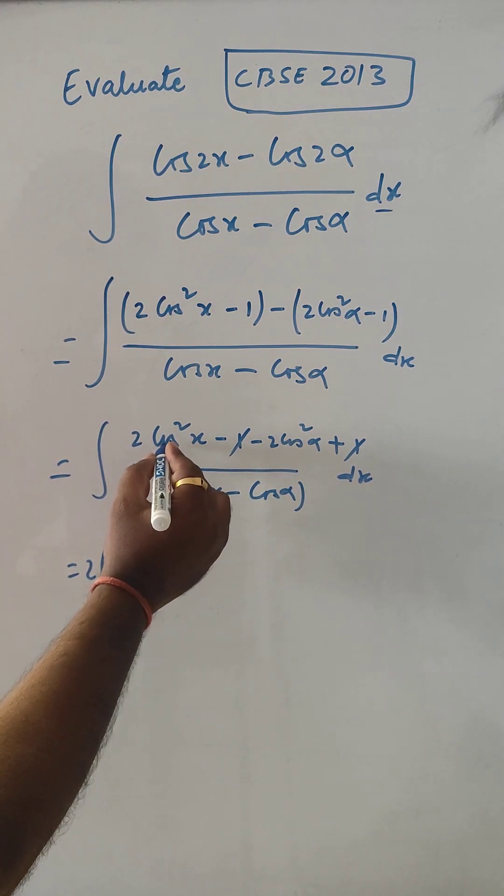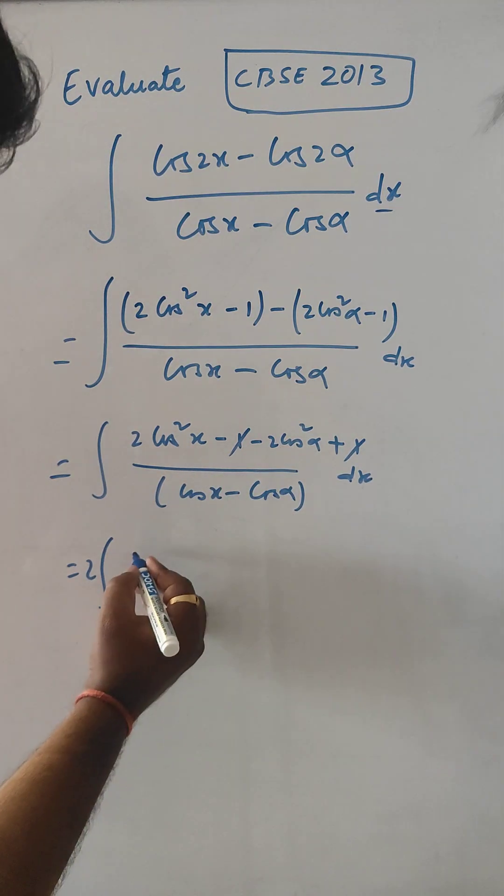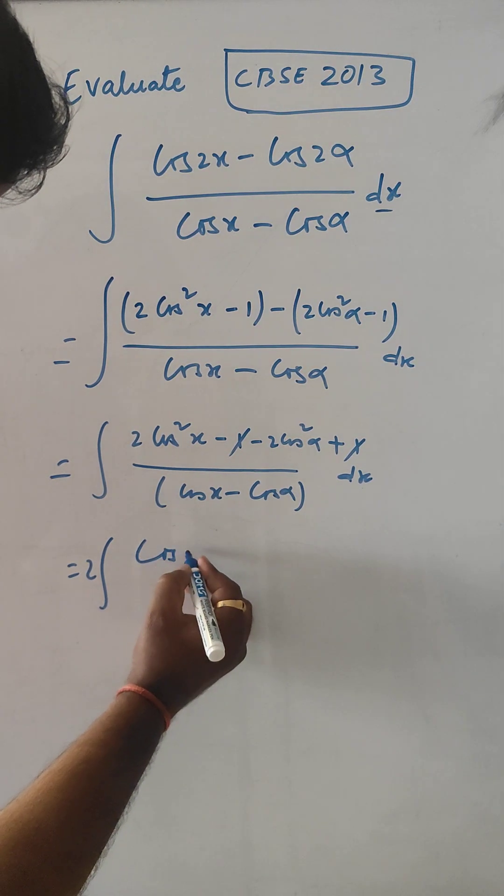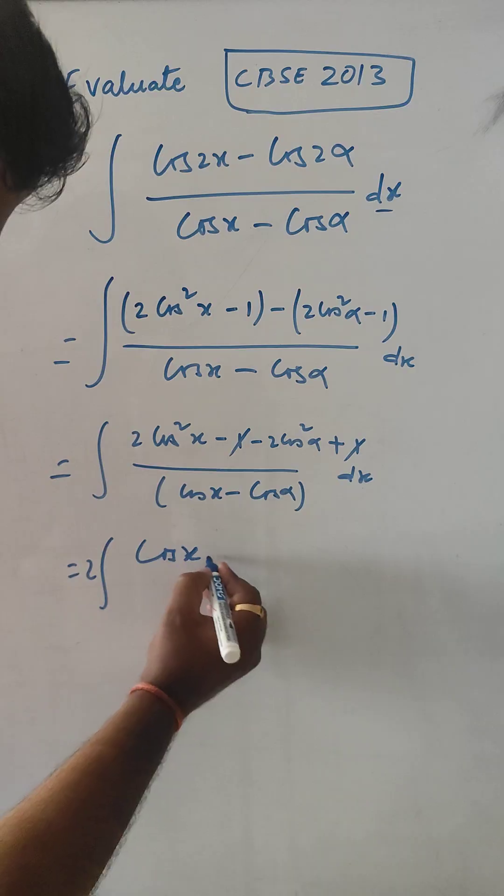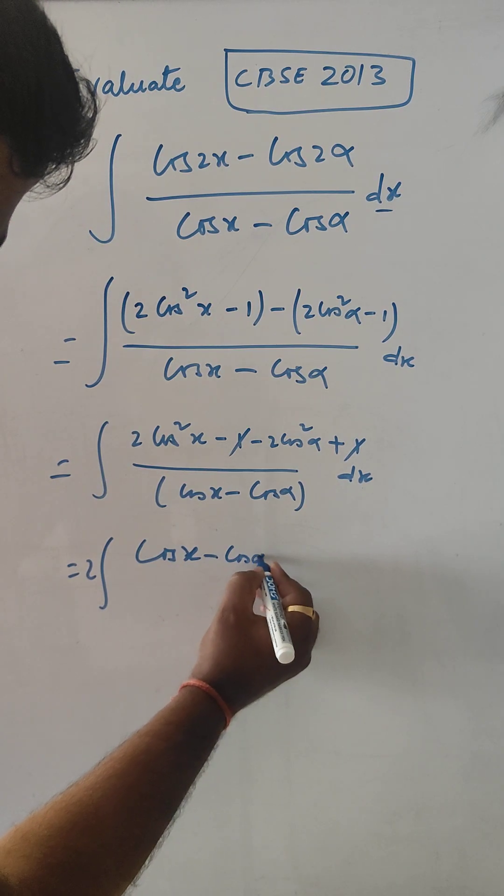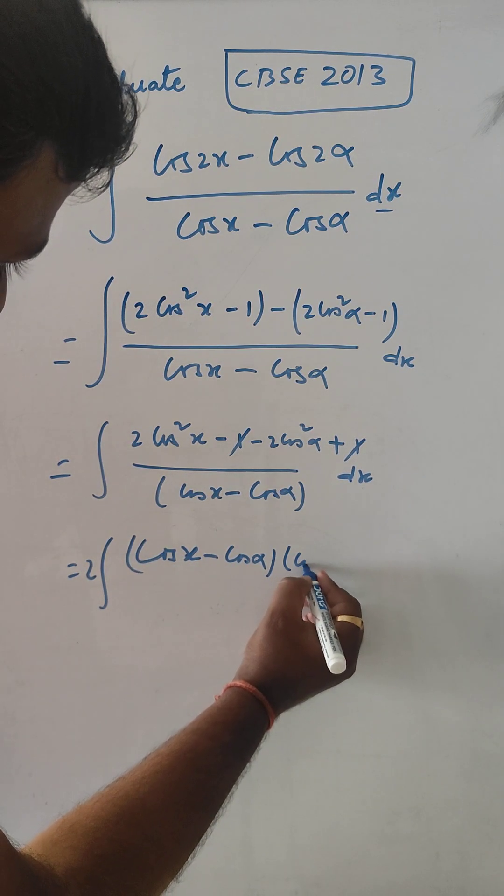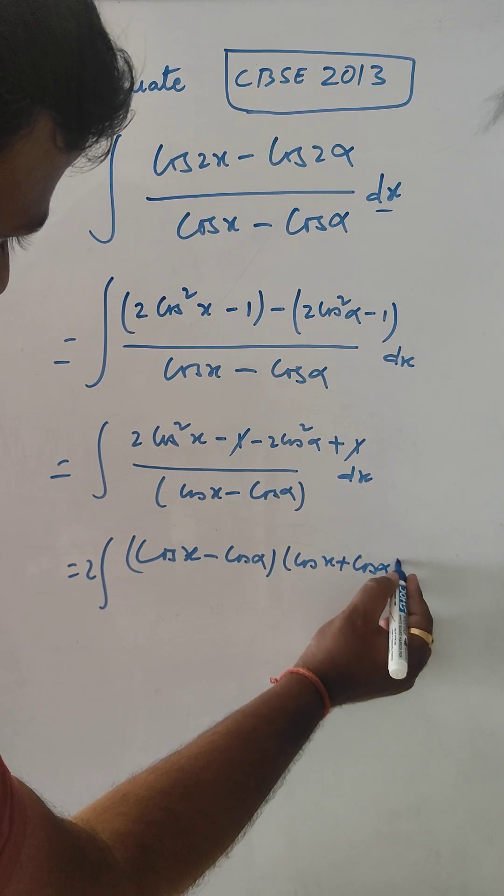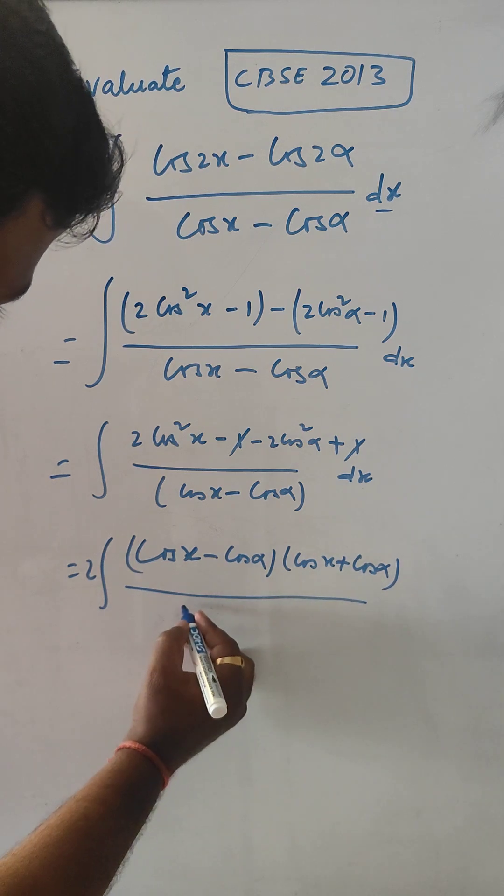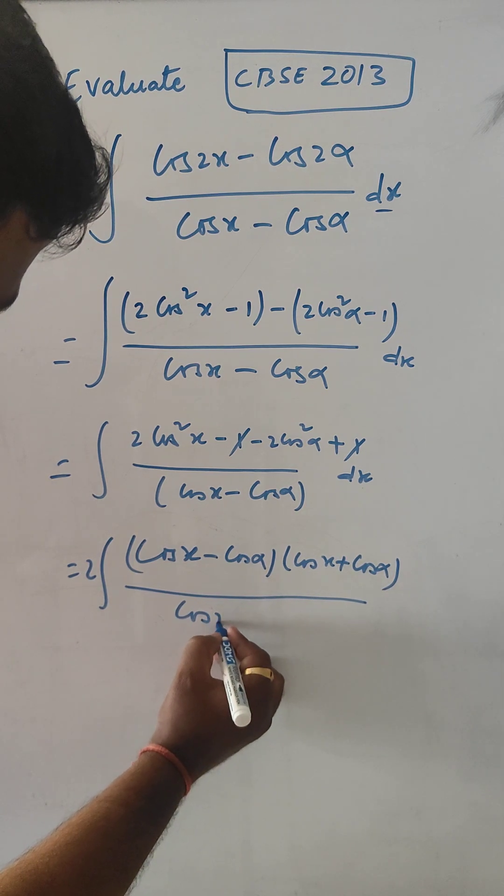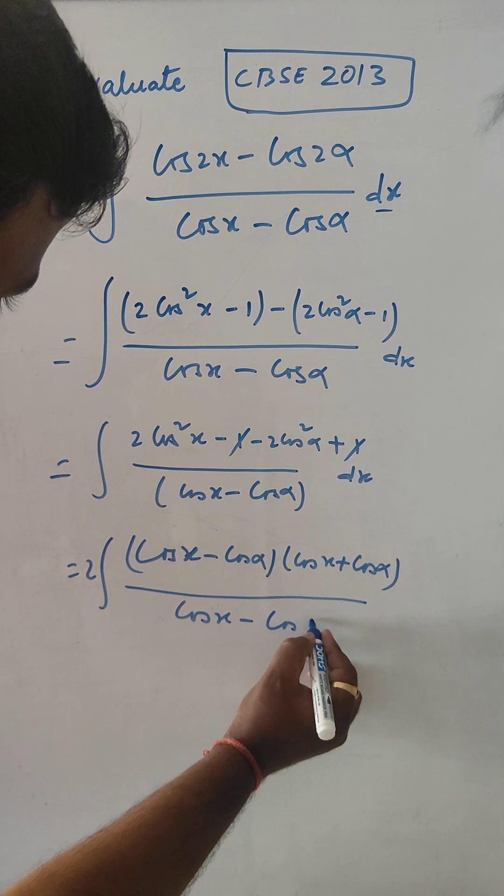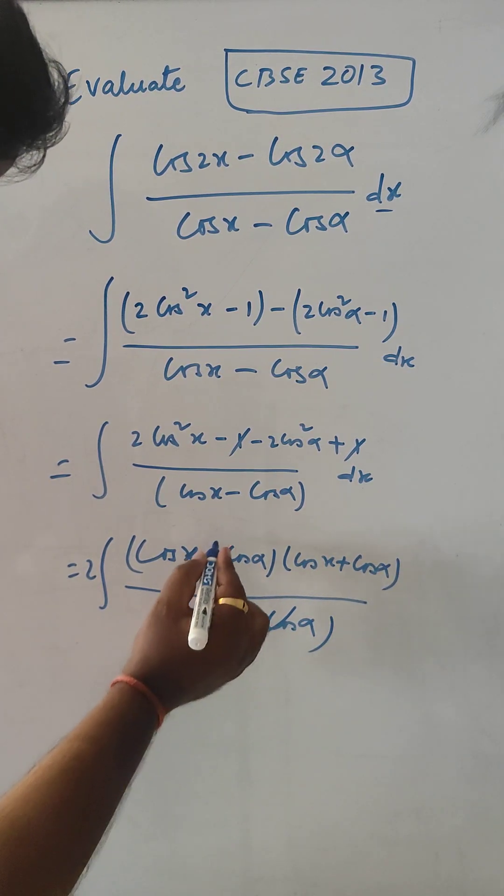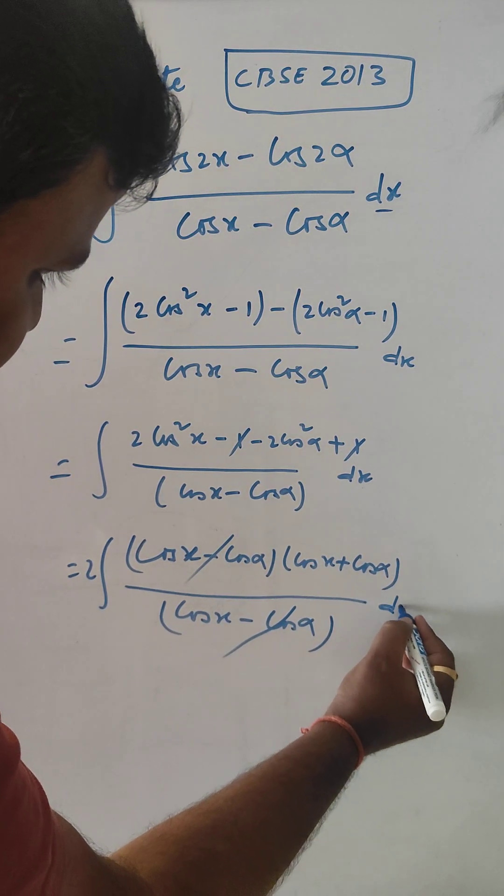This is an a² - b² formula. We get (cos x - cos α)(cos x + cos α) in the numerator, with cos x - cos α in the denominator. These terms cancel, leaving dx.